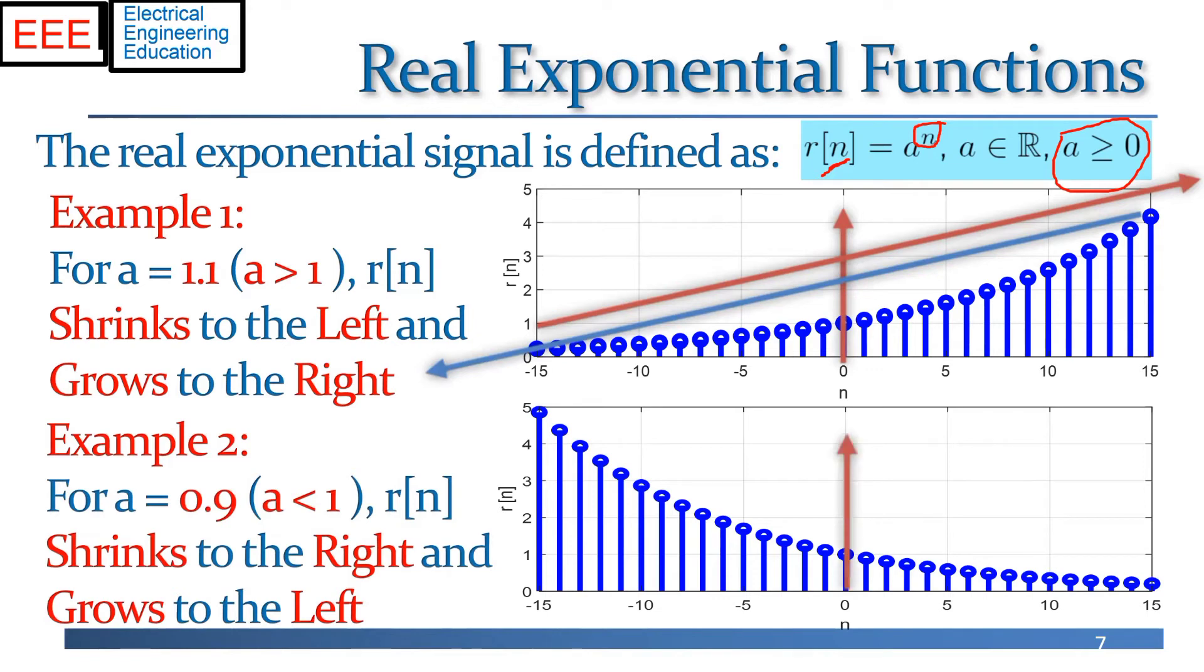And these are just two examples here. a is zero point nine between zero and one. And in this example, a is one point one. So that's the real exponential.